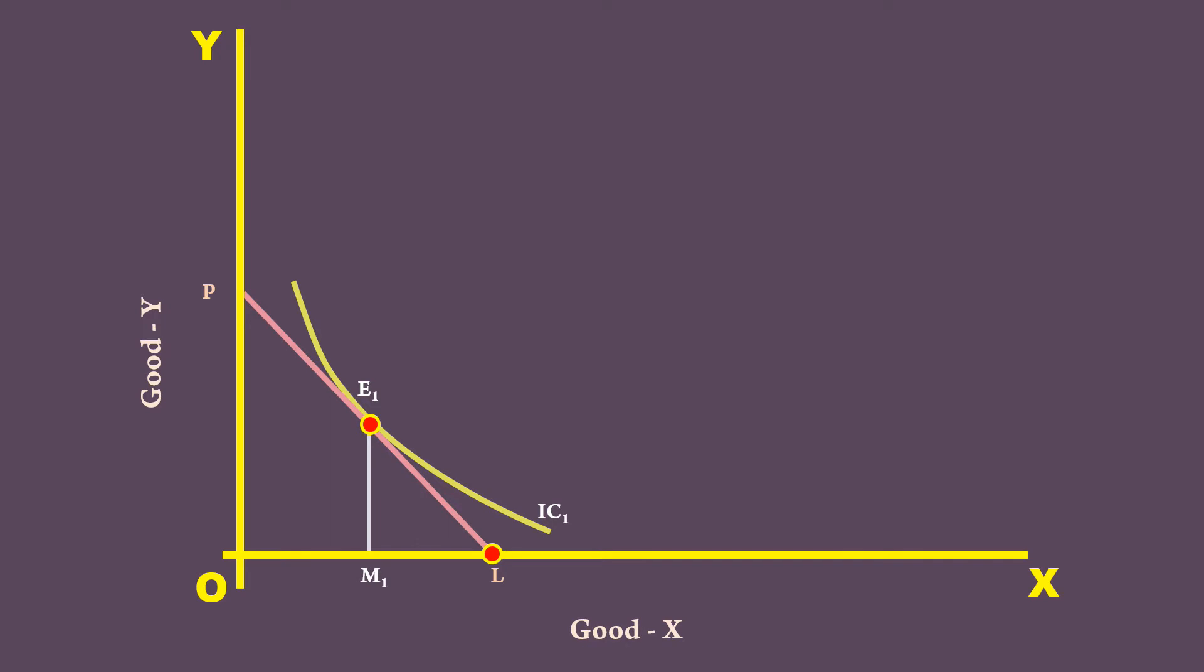Price of Good X falls. Seven important things happen after the fall. 1. The point L moves to the right and reaches L2. 2. New price line PL2 is formed. 3. Good X becomes relatively cheap. 4. The real income of the consumer increases.